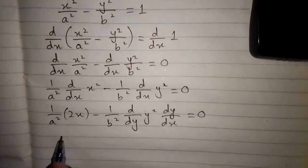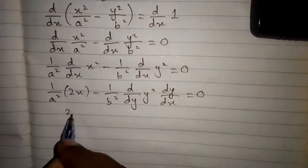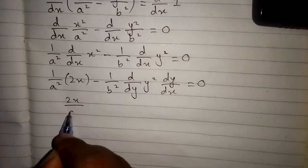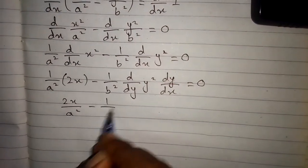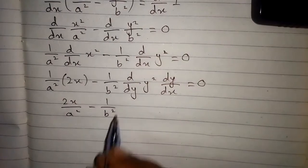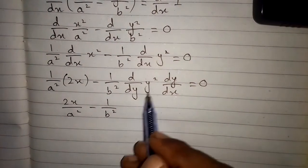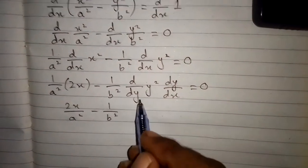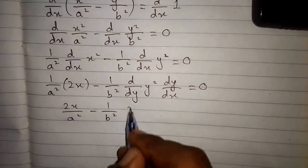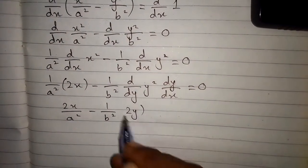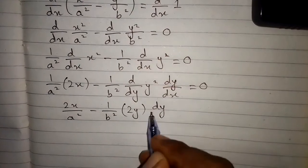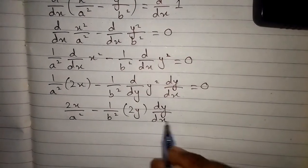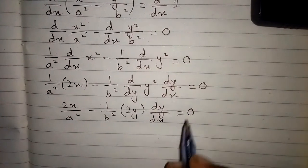So now we can write 2x/a² minus (1/b²)·2y·(dy/dx) is equal to 0.